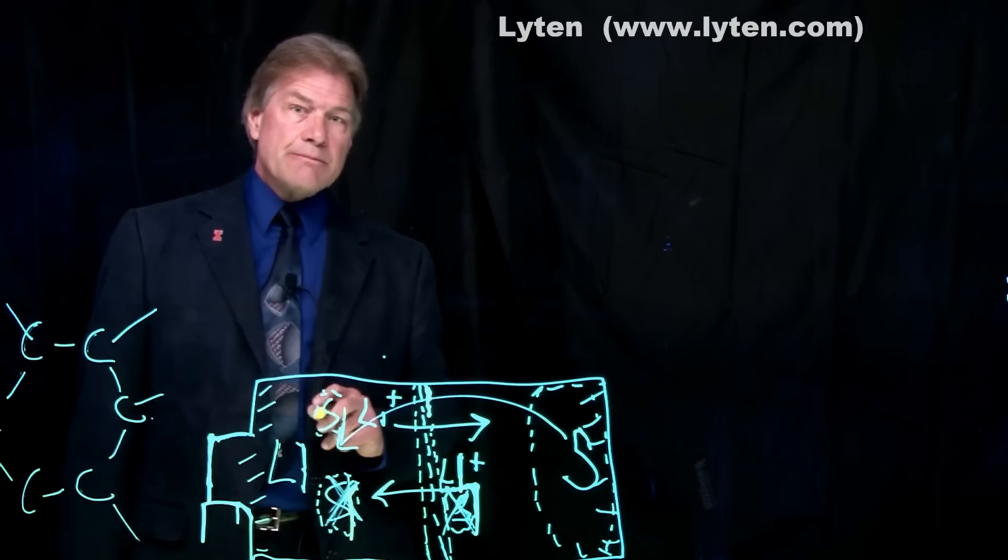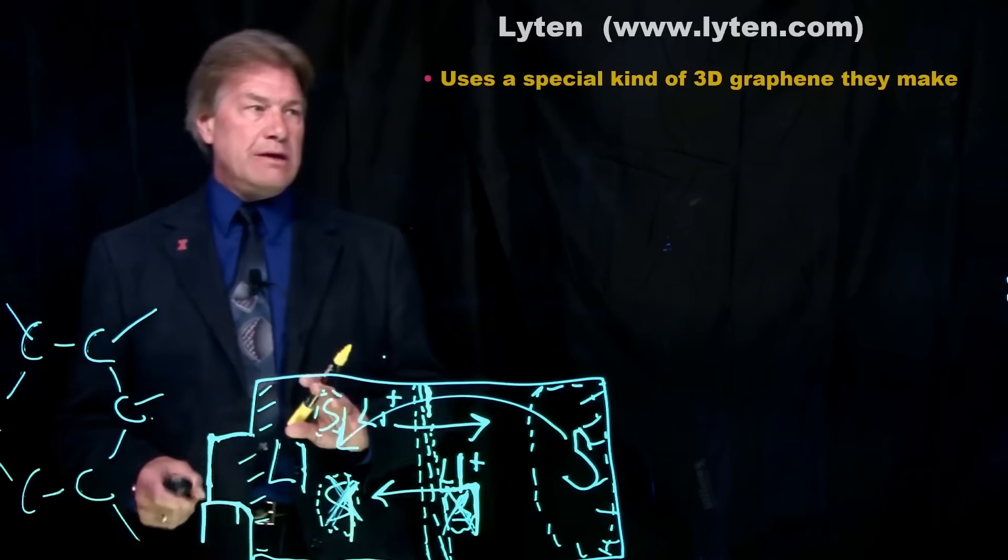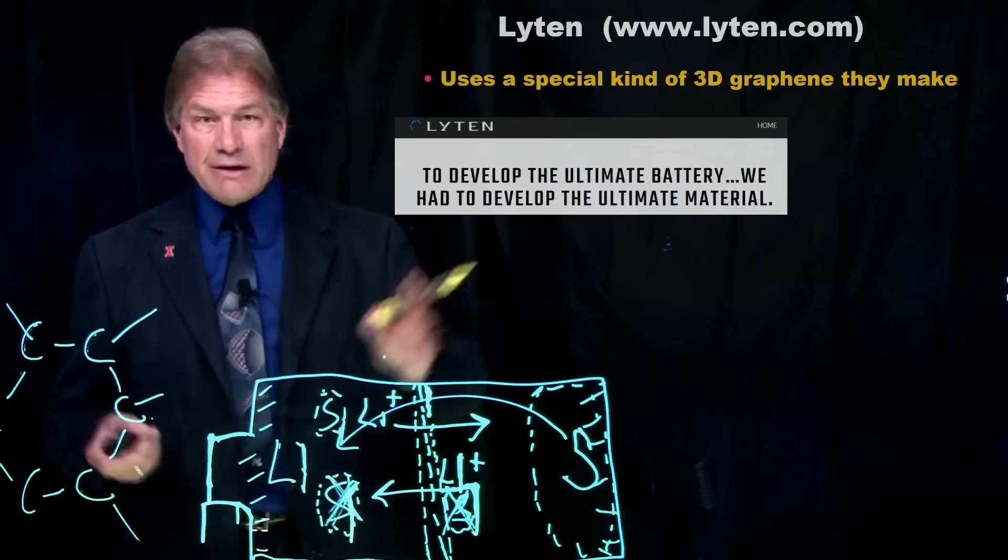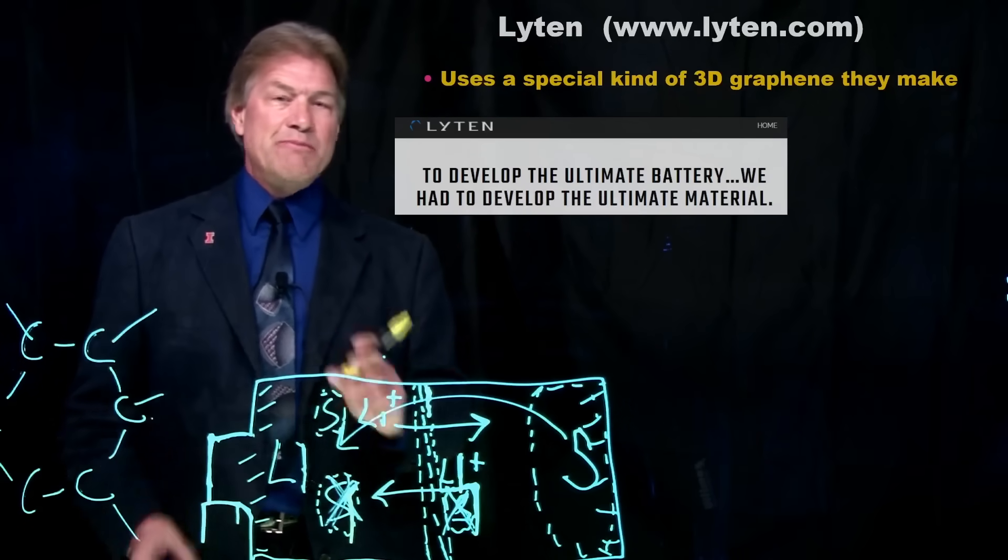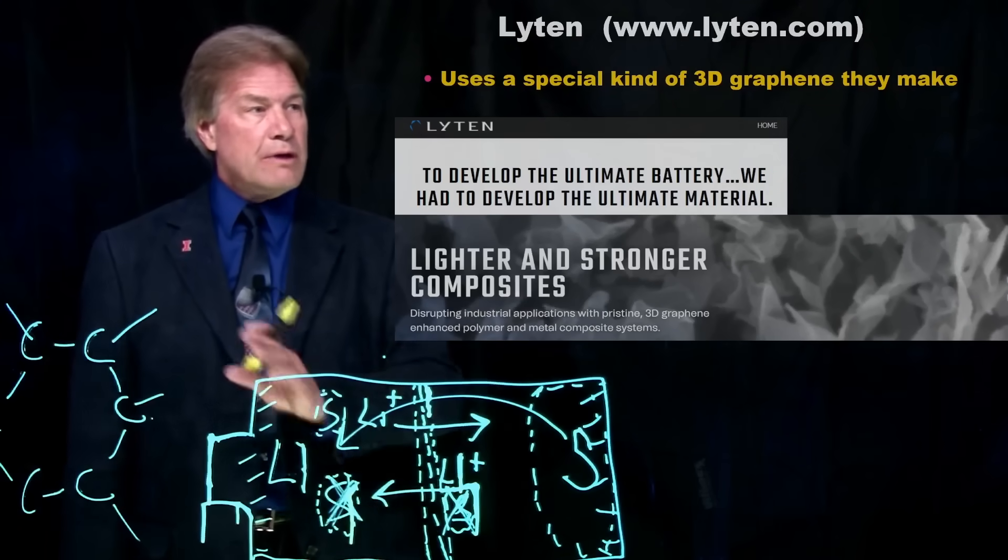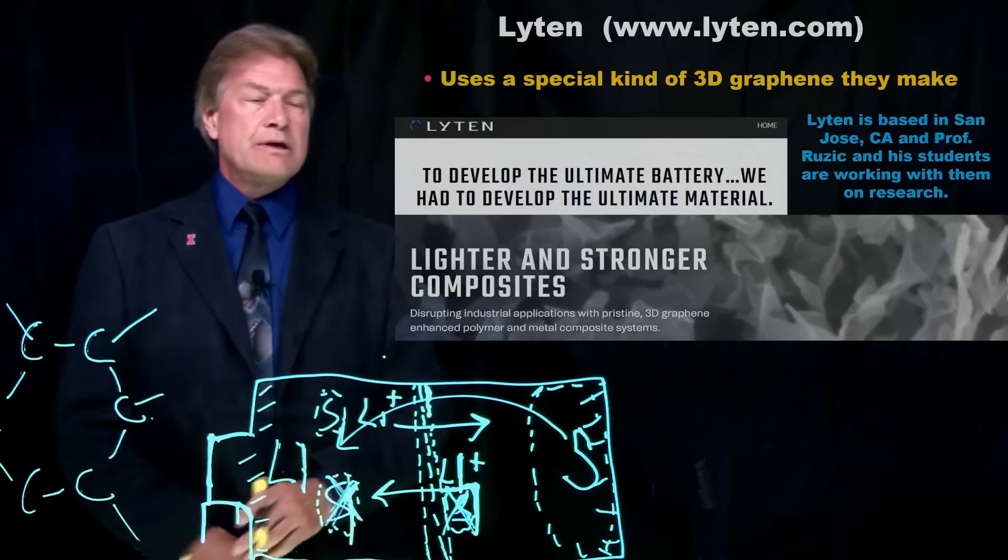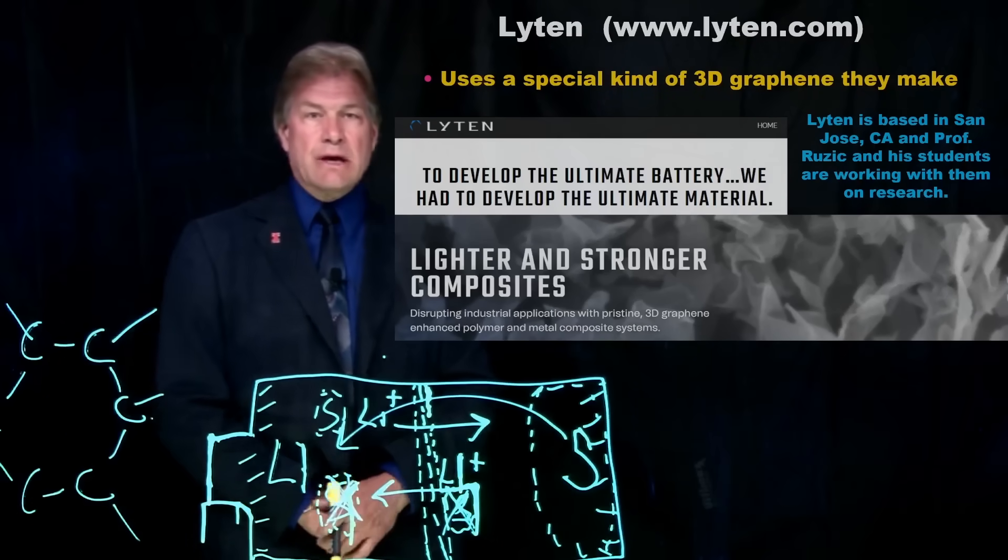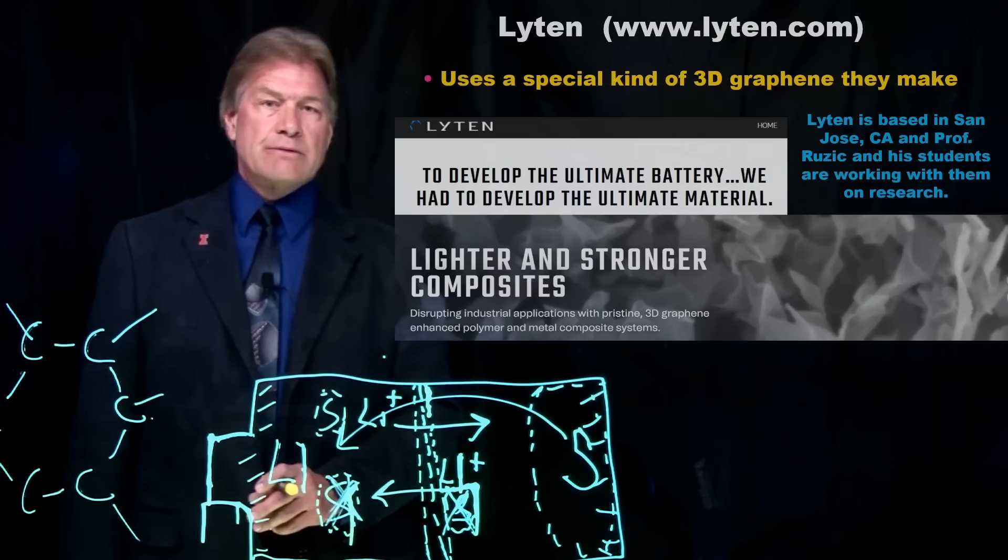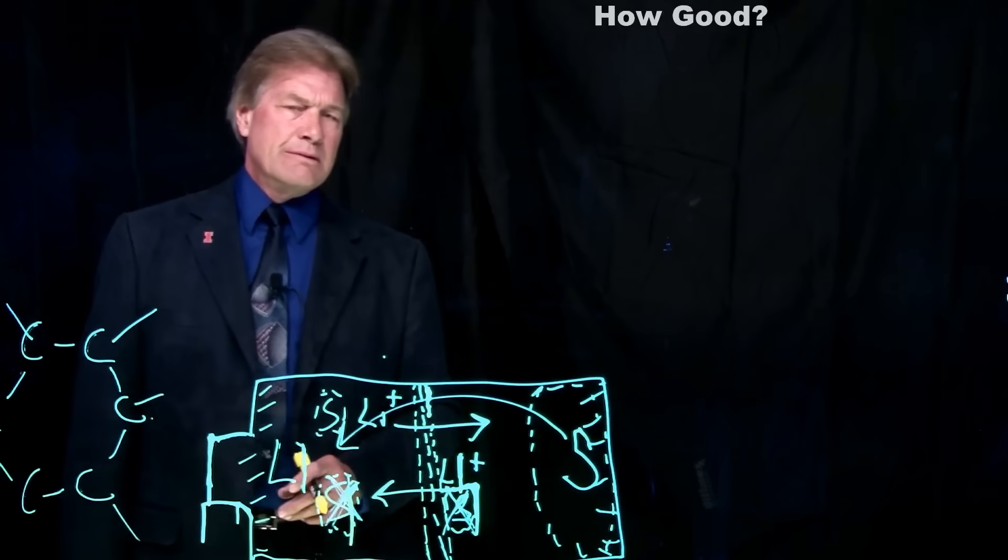And if you can do the graphene right, you might be able to accomplish these goals to stop the degradation. And there's a company that does that. Lighten. They make a special 3D graphene. Only they know how to make it. And to develop a better battery, like their website says, they have to make a better material. And they actually even have pictures of it. There you see individual atom-thick sheets of graphene. Now, I know about this company because my students and I work with them. They're based in San Jose, but we work on research with them to help try to create this graphene. You might say, okay, that's great, Professor Ruzick, but, you know, how good? How good really is this?